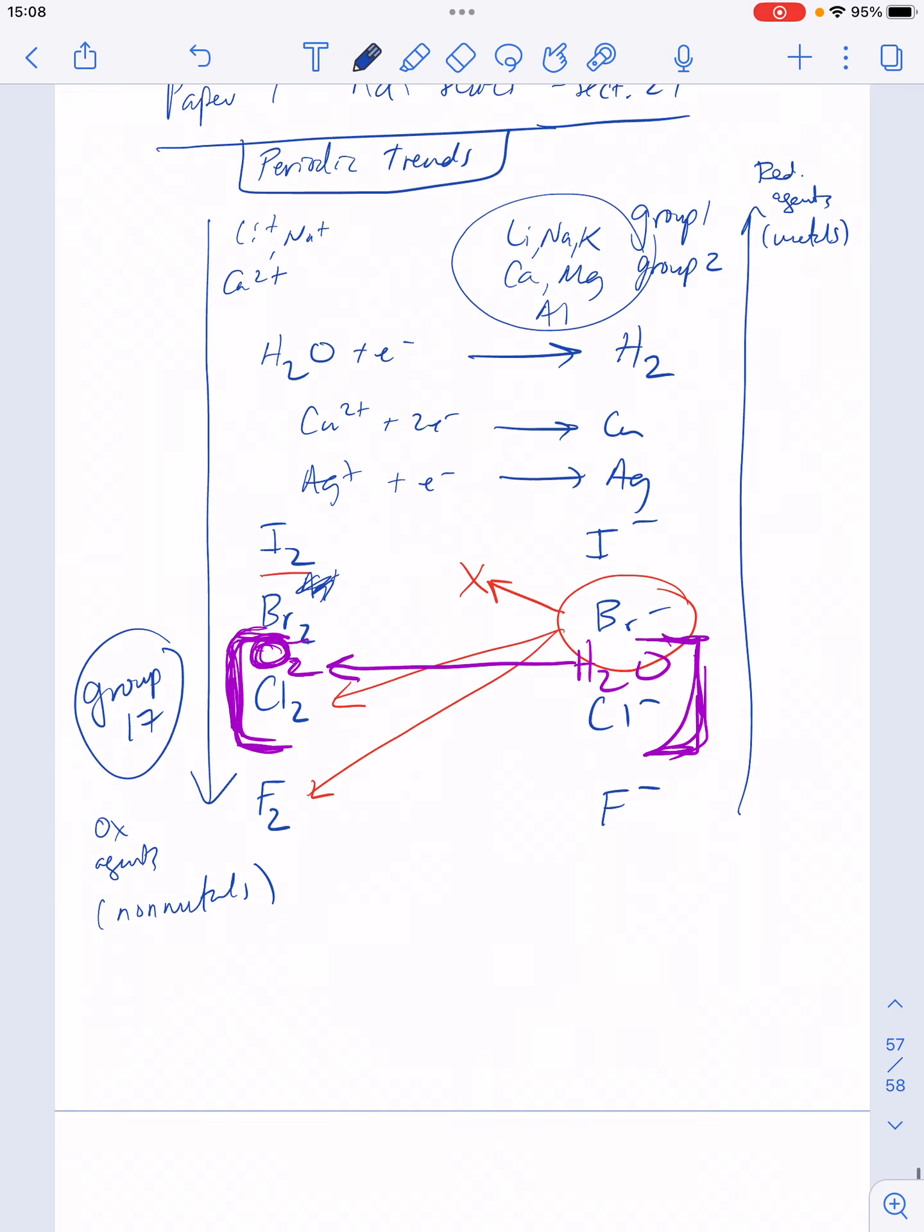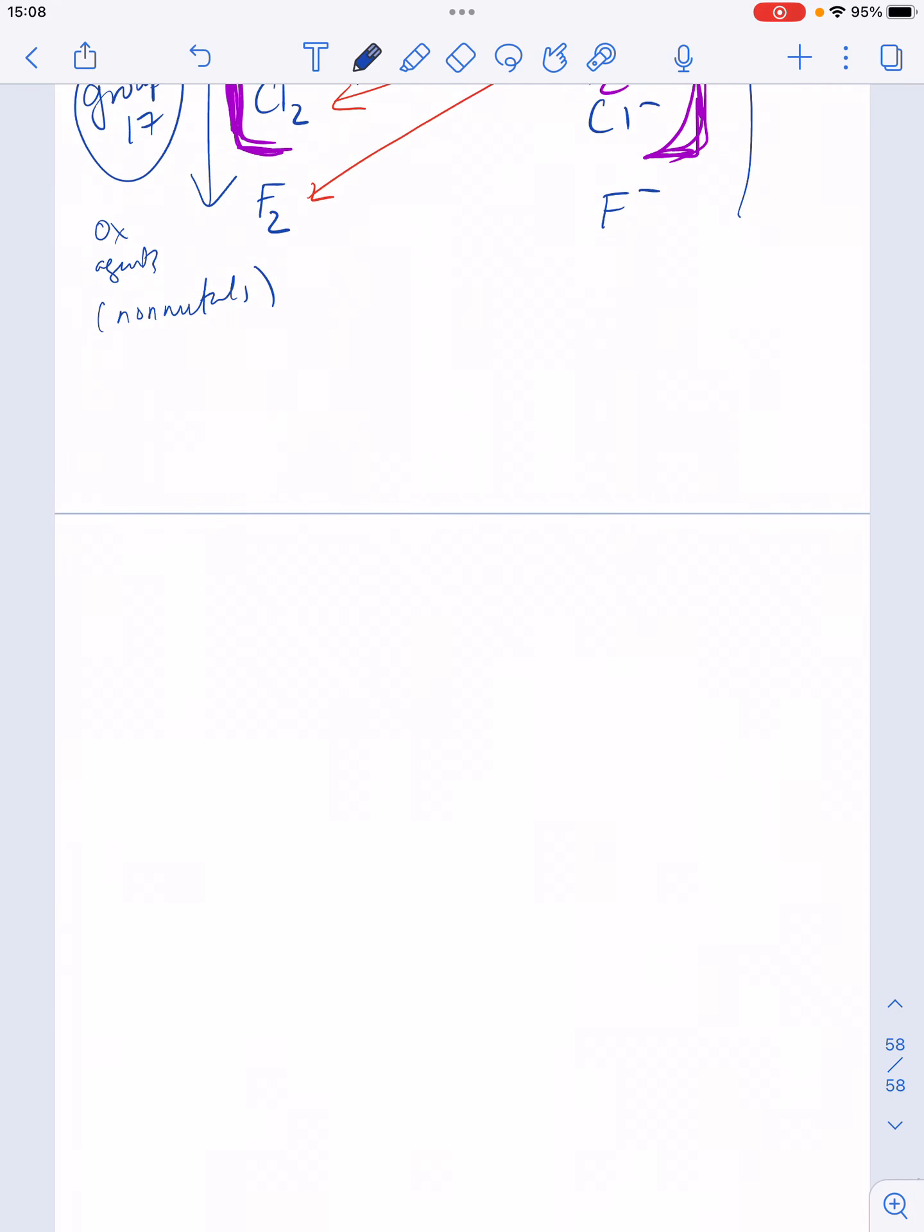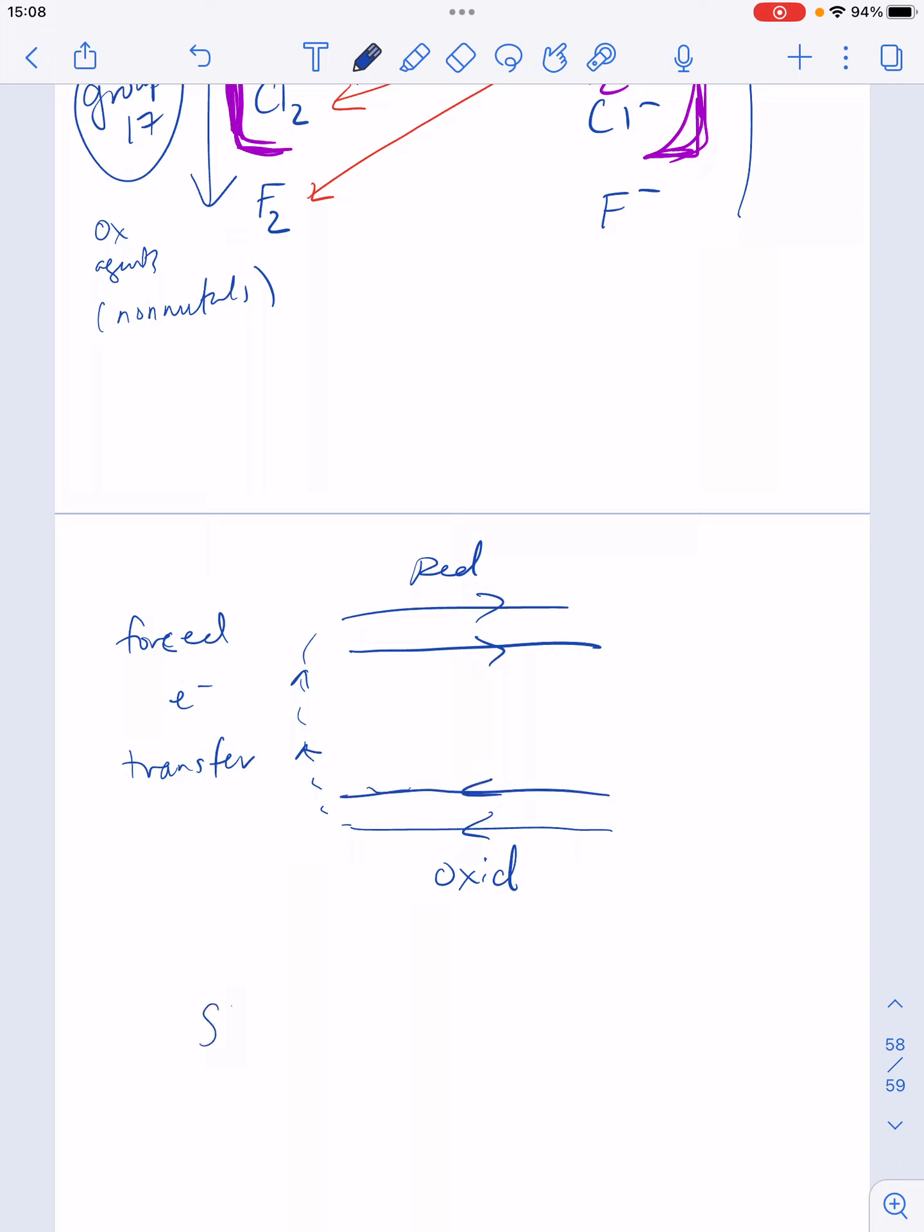So when we do electrolysis topics for HL, and you're thinking about that non-spontaneous C, you're going to be looking for oxidation at the bottom and reduction half equations at the top. And this is the direction the forced electron transfer goes energetically uphill. Now when you have a couple that you're picking between, you always want to pick the skinnier C. The skinnier C, non-spontaneous C, is the one that ends up being smaller delta G positive. And that means even though it's still non-spontaneous, it is less non-spontaneous.